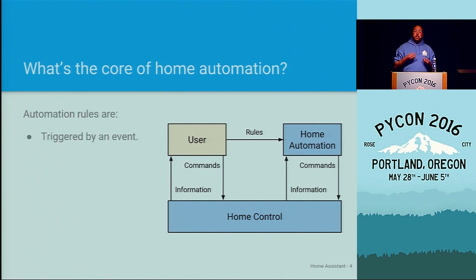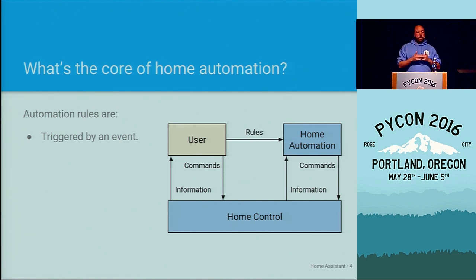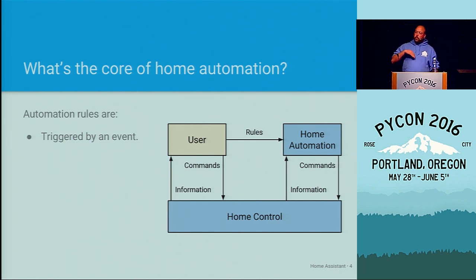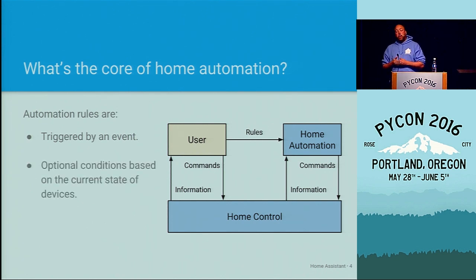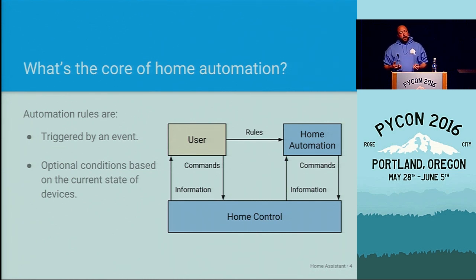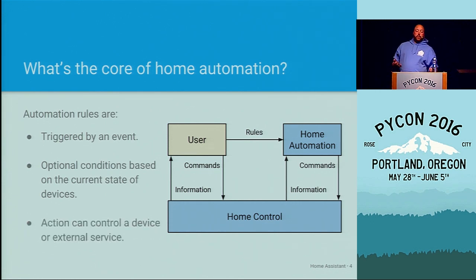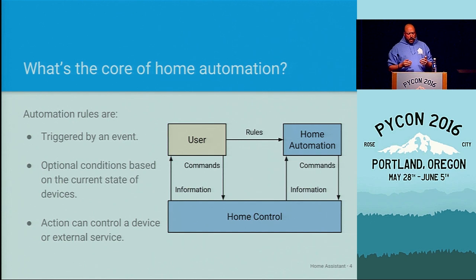Home automation is rule-based. The triggers for home automation are always an event — it cannot be when the light is on, but rather when the light turns on. So in the example I gave, the trigger is when a person arrives home. The next part is conditions — you don't always want rules to execute when a certain event happens. Only when the sun has set do you want to turn the lights on. The last piece is to actually send the command: turn the lights on.